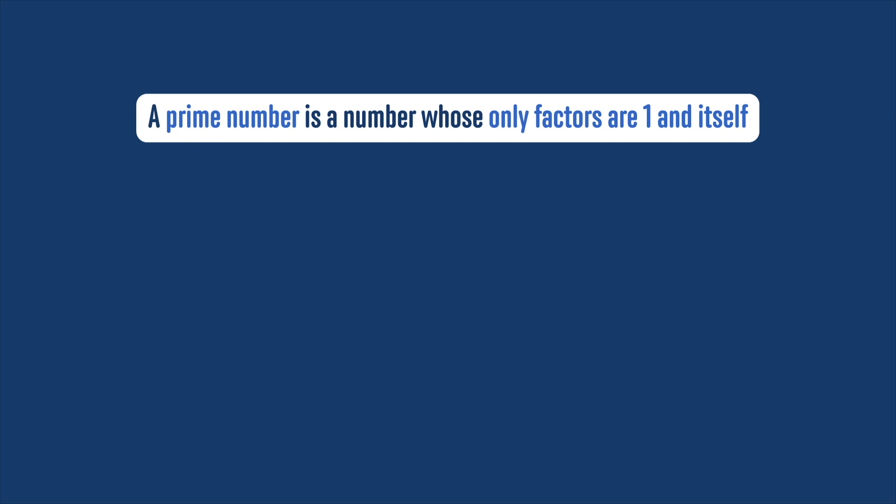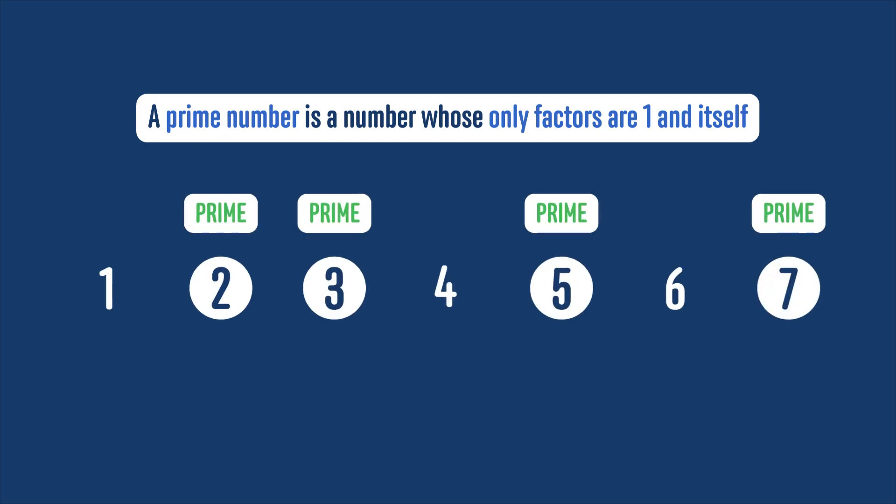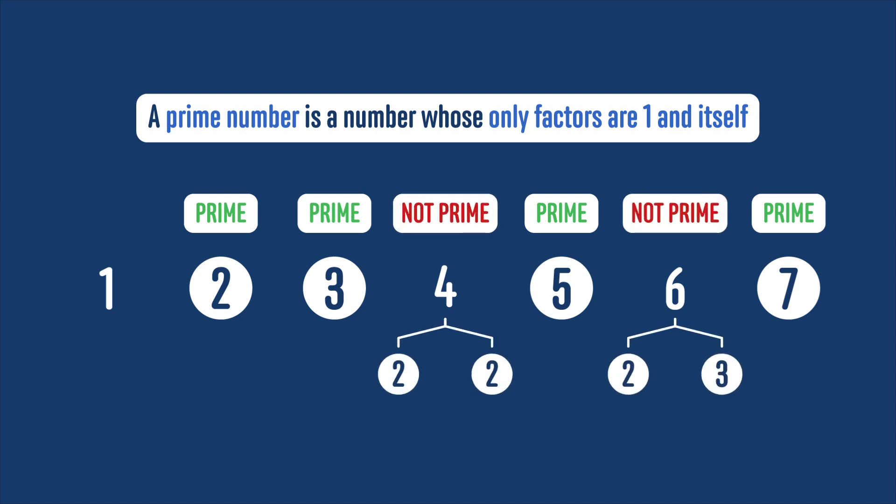A prime number is a number whose only factors are 1 and itself. So 2, 3, 5, and 7 are all prime because they can't be broken down into factors. But 4 and 6 are not, because 4 is 2 times 2, and 6 is 2 times 3.